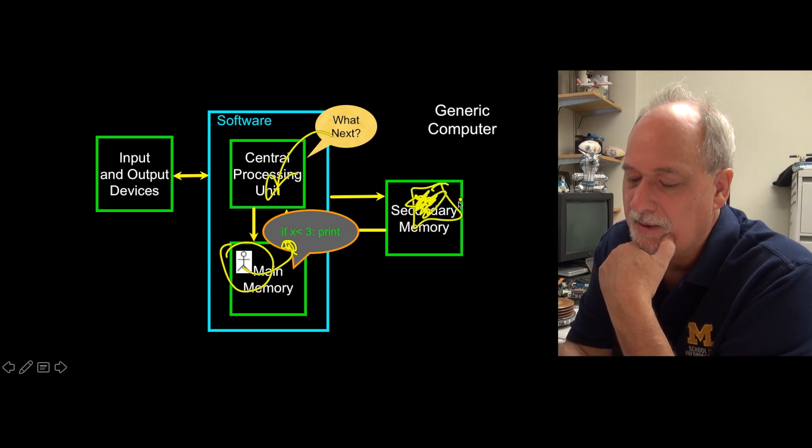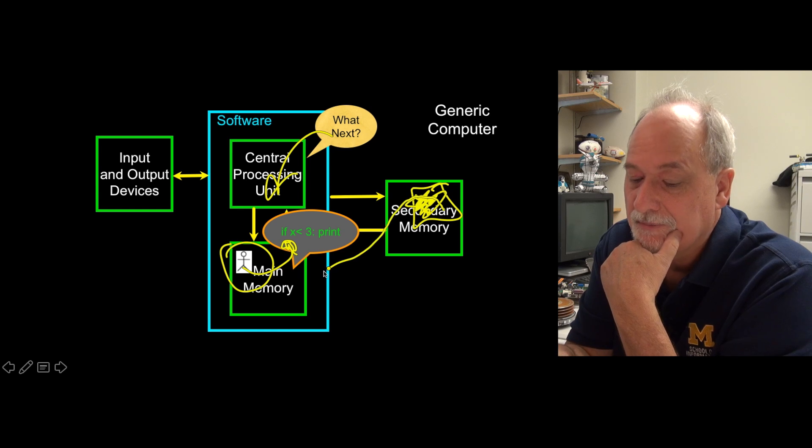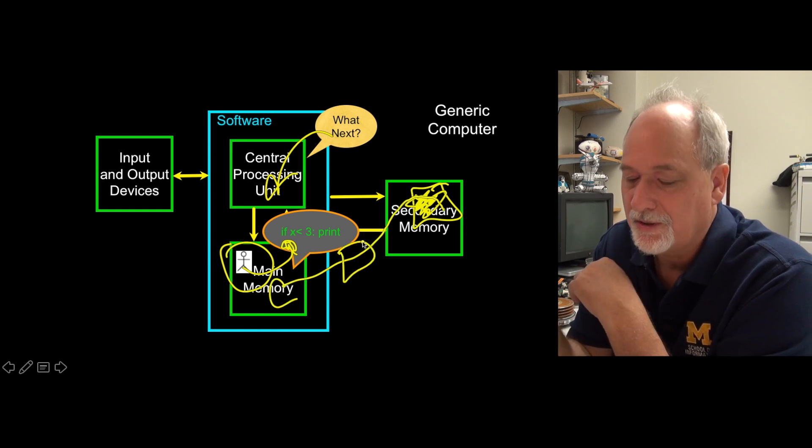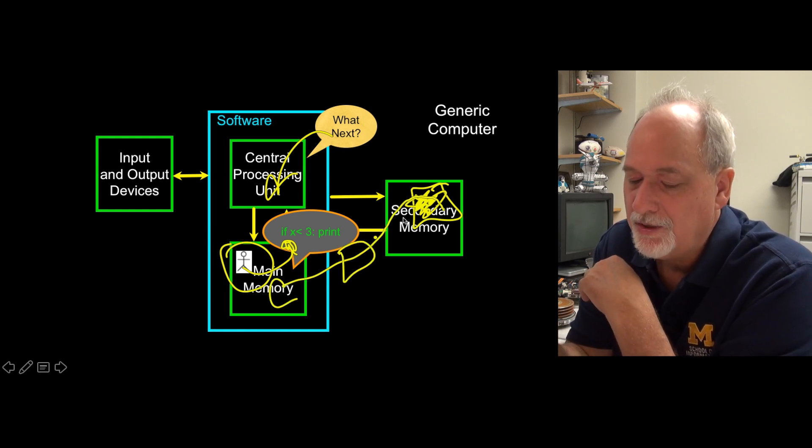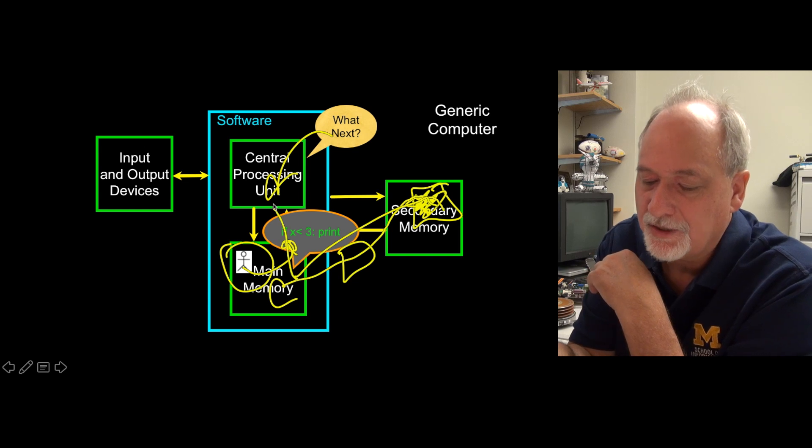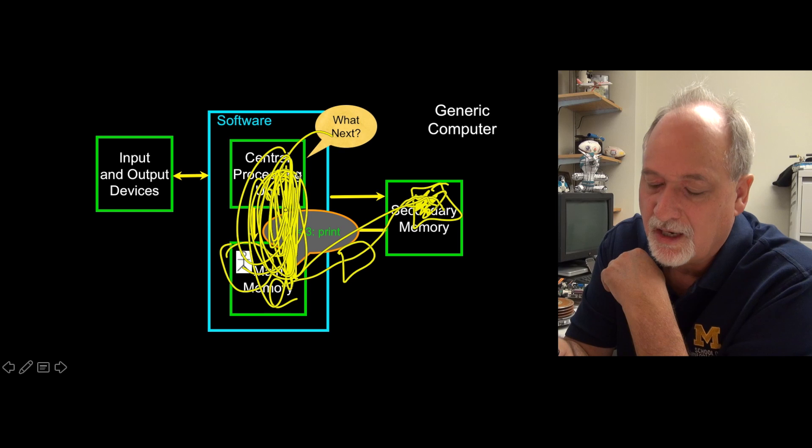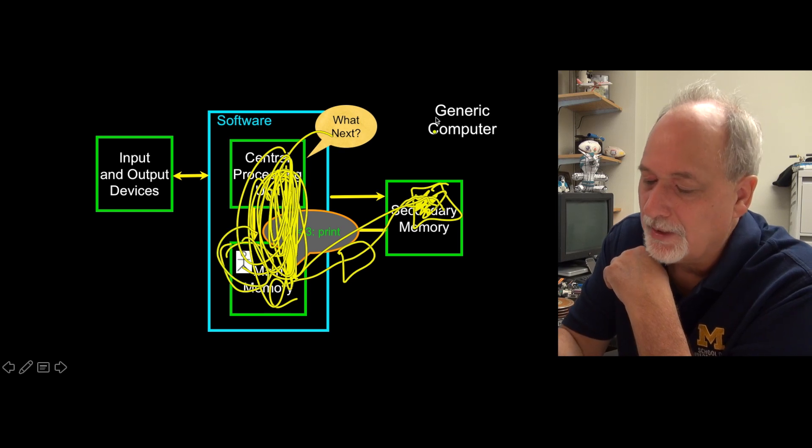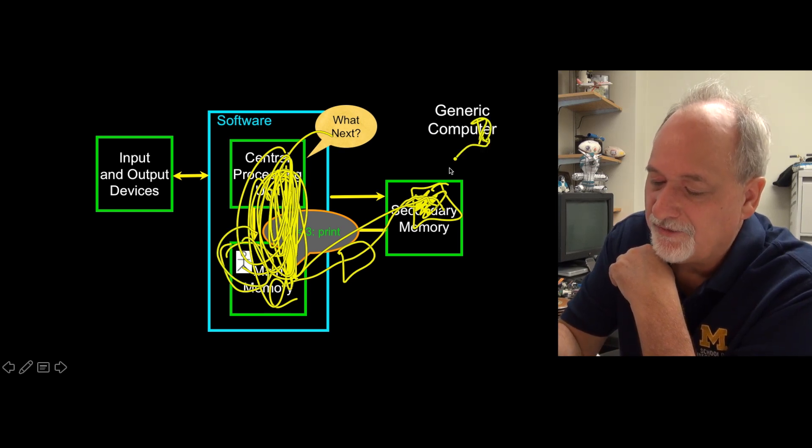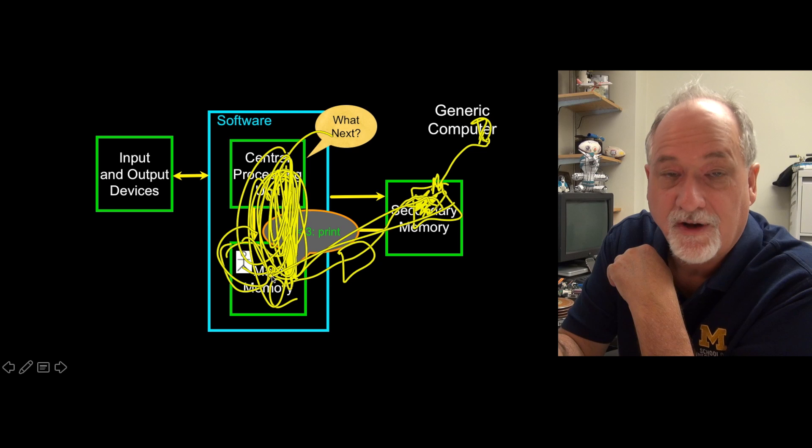And then that Python code sort of gets loaded into main memory. There's a magic translation process that happens. And then your code is actually answering this question three billion times a second. Three billion times a second, you're sitting there. But this is you. You're really out here, but you then write a file and the file's loaded in and then the file runs. And that's how things are and that's your place in the world.